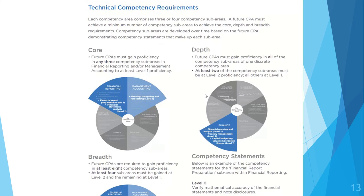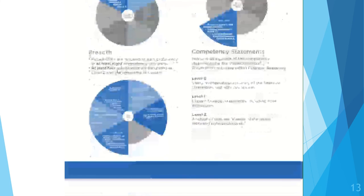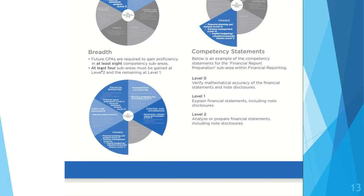To get all your technical competencies, the first part is developing your core competencies in financial reporting and management accounting. In those two sectors, you have to develop three of the bullet points to at least a level 1. The next step is to get depth: in the six competency areas, one of those areas needs to have two level 2s developed, where the remaining one can be a level 1, and you have to hit every single bullet point in that area. The next thing is breadth: you have to gain proficiency in at least eight competency sub-areas, meaning eight bullet points must be at a level 1 or level 2, with at least four of those at a level 2.